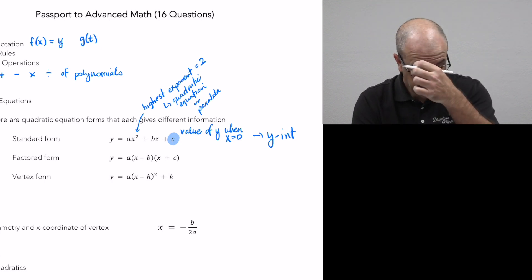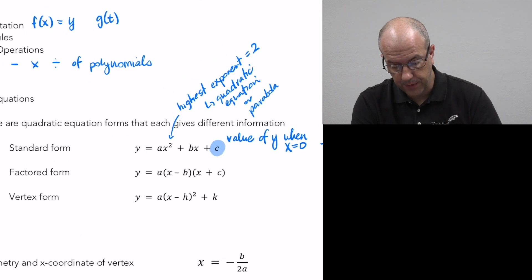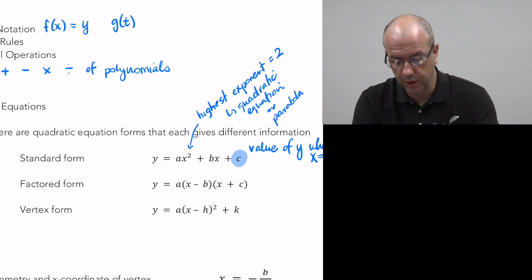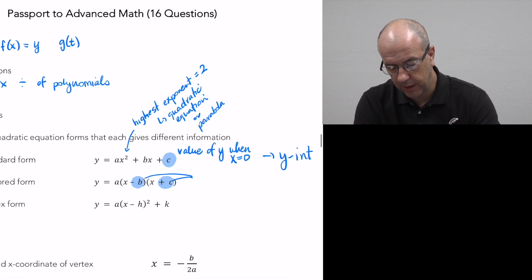The factored form is the next form they expect you to know. It turns out that the factored form, these terms here, give us the x-intercepts. Now be careful here because it's opposite of what you think it might be. So this is b, 0 and another one would be negative c, 0. So it's the opposite of the sign that is presented in this factored form.